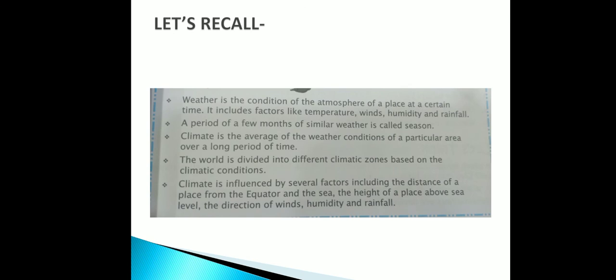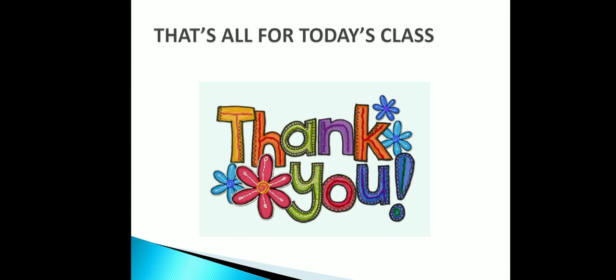Let's recall: Weather is the condition of the atmosphere of a place at a certain time, including factors like temperature, winds, humidity, and rainfall. A period of few months of similar weather is called a season. Climate is the average of the weather conditions of a particular area over a long period of time. The world is divided into different climatic zones, and climate is influenced by distance from the equator and the sea, height above sea level, winds, humidity, and rainfall. Thank you.